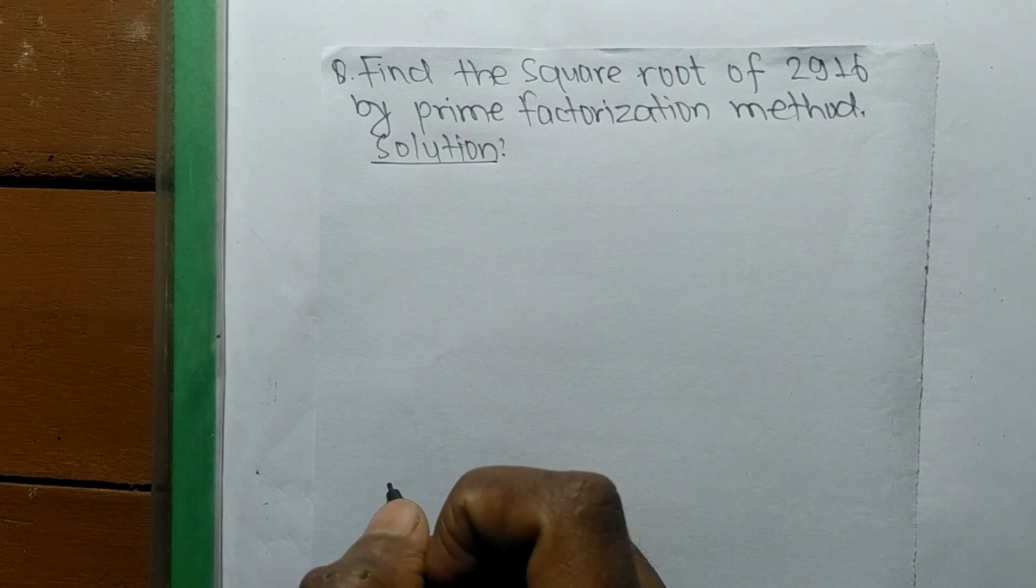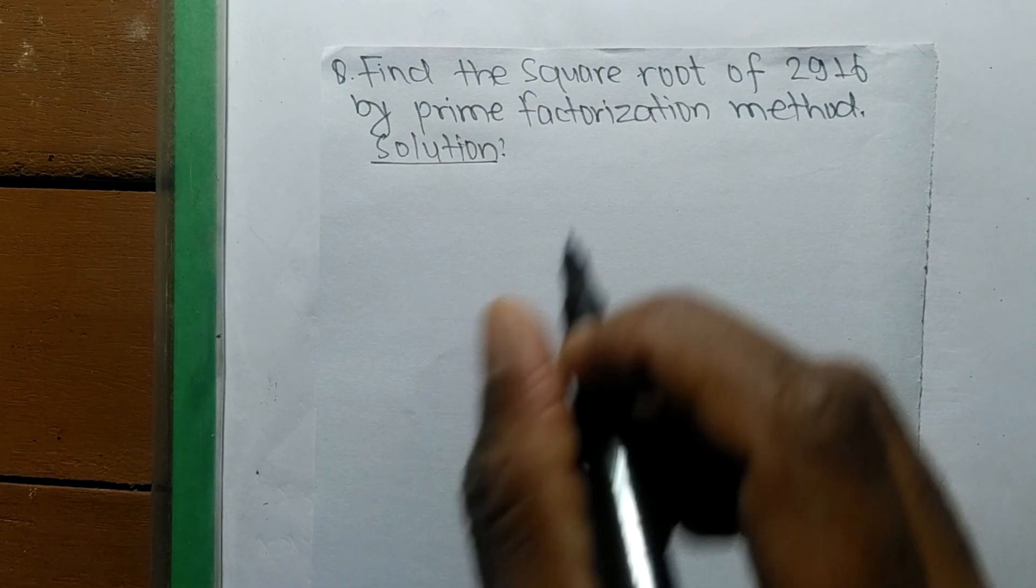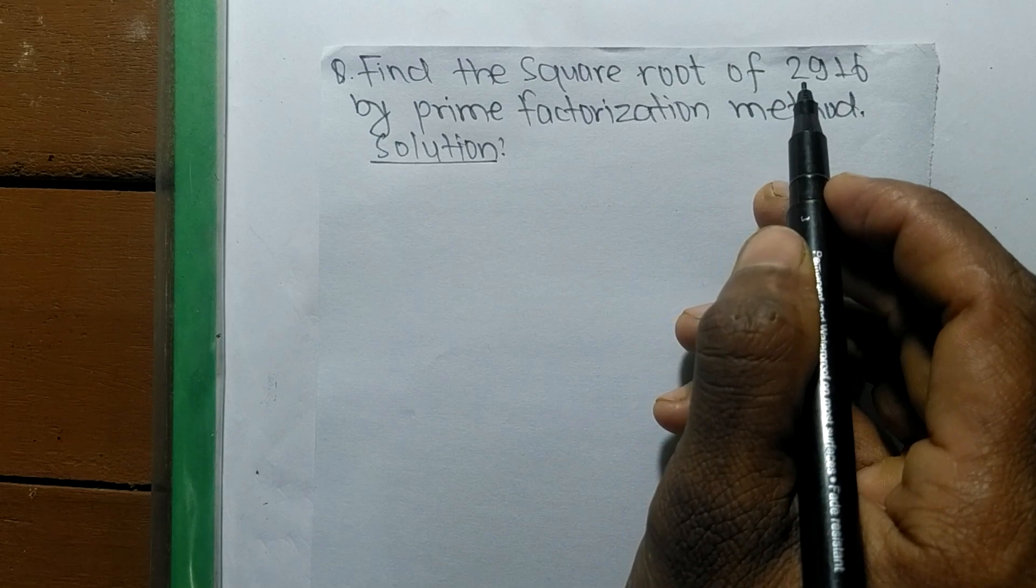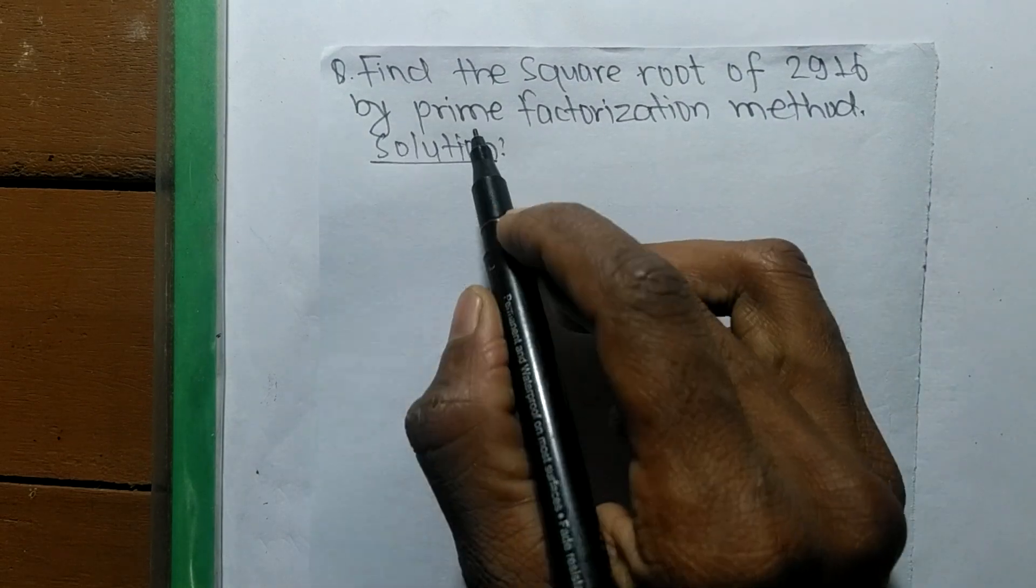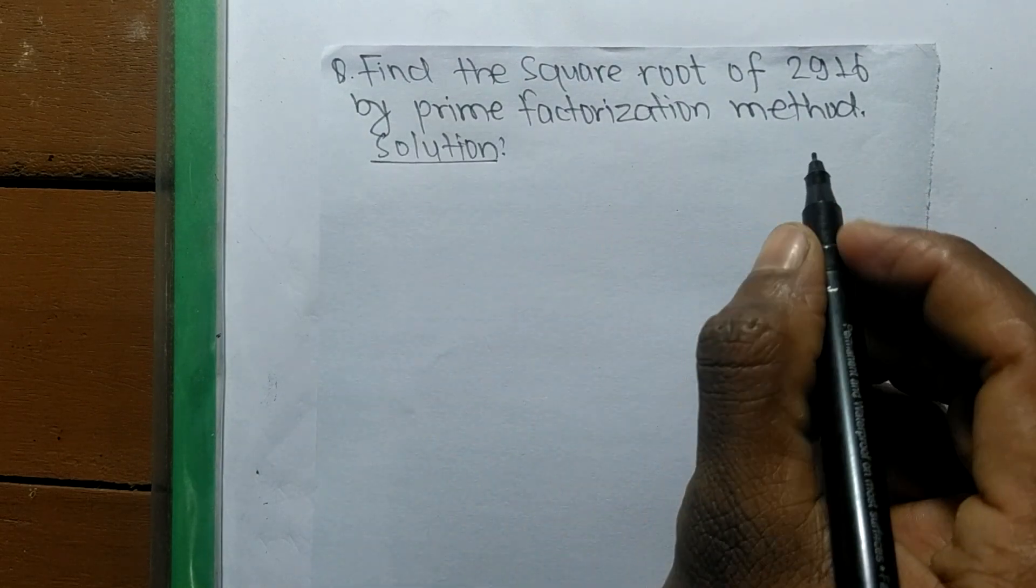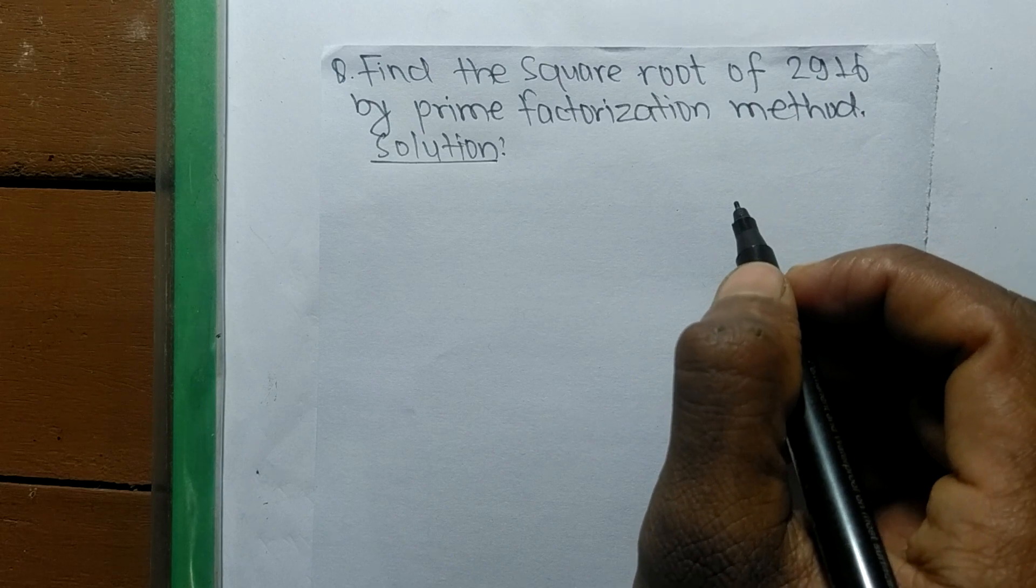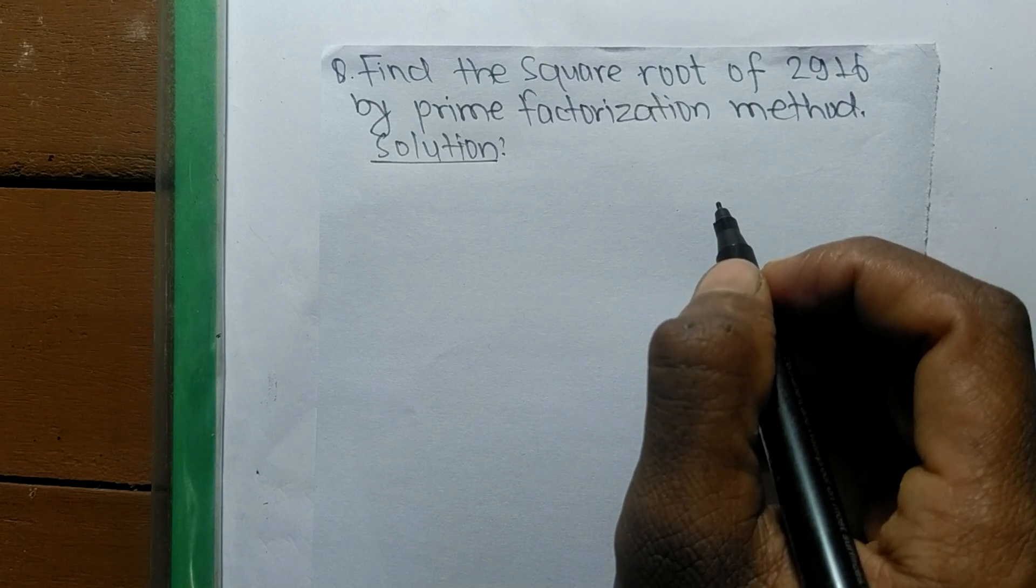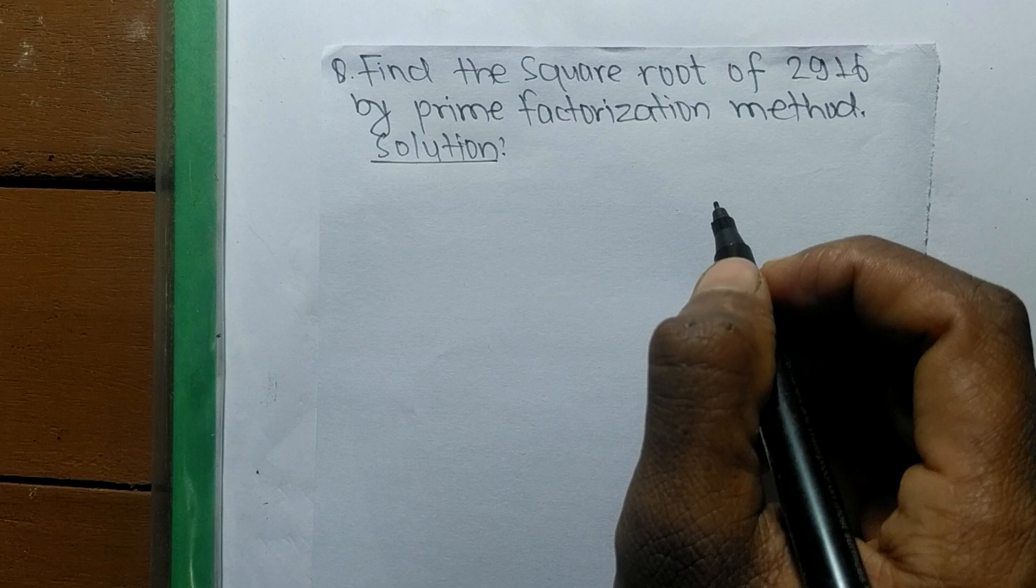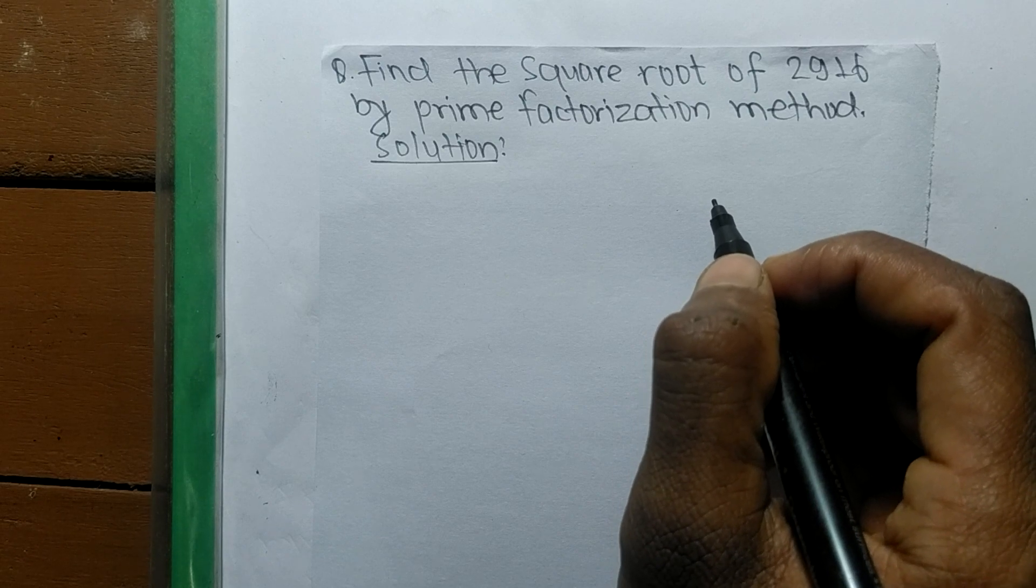So today in this video we shall learn to find out the square root of 2916 by prime factorization method. To find out a square root by prime factorization method, first of all we have to find out the prime factors of a given number.